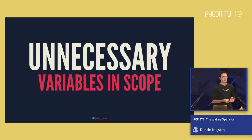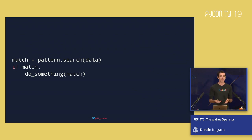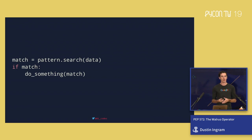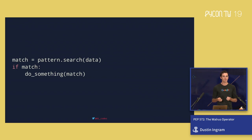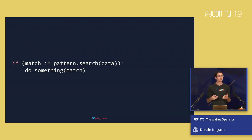Another thing the walrus operator lets us do is avoid unnecessary variables in scope. If you've ever used regular expressions, you've probably written something like this: search data for a match, then test if match exists, because sometimes it's None and sometimes it's a regex object. With the walrus operator, I can define match inside the if statement — so that variable only exists for that if statement, in one line, making it clear I'm only planning to use match inside that block.